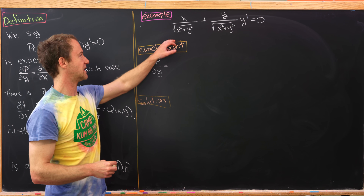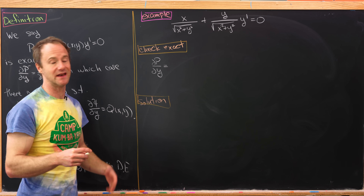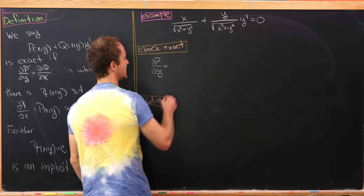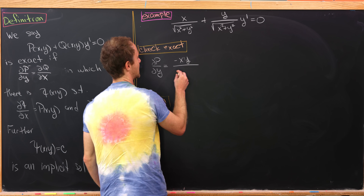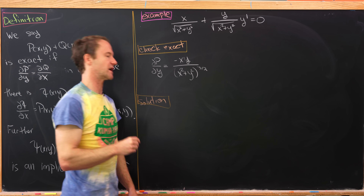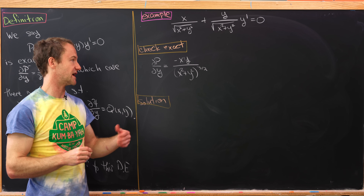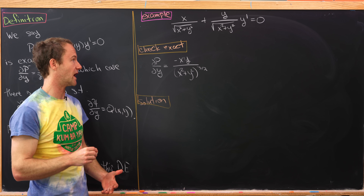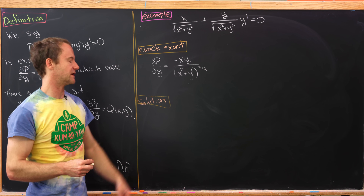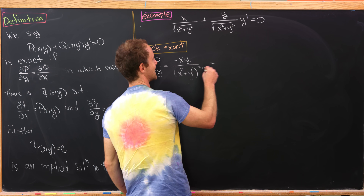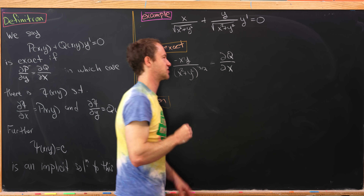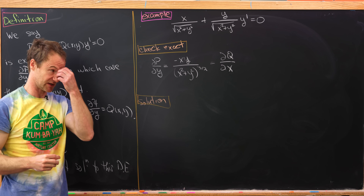Let's take the partial of p with respect to y. We'll use the chain rule here, keeping in mind that we've got a negative half power exponent in the denominator around x squared plus y squared. In the end, that will give you minus xy times x squared plus y squared to the three halves. I just used the chain rule — taking the derivative of y squared is 2y, and the minus half cancels the 2 and gives a minus sign. Notice that is exactly the same as the partial of q with respect to x, which is pretty clear just because of the symmetry built into these functions.